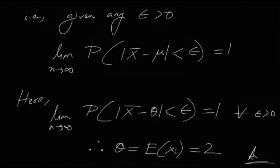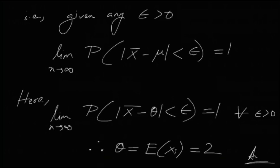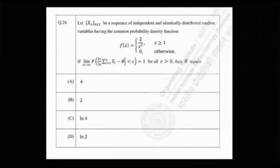Therefore, θ must be the population mean. The answer is that θ equals E[Xᵢ] = 2, because X̄ converges in probability to the population mean, and here it is stated that X̄ converges in probability to θ. So this was a very easy problem — all you need to know is the Weak Law of Large Numbers.